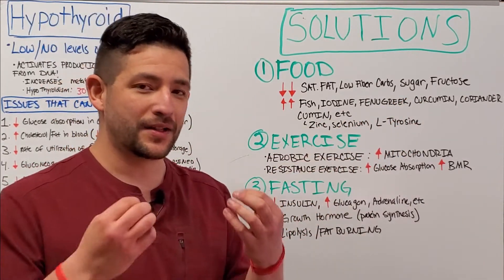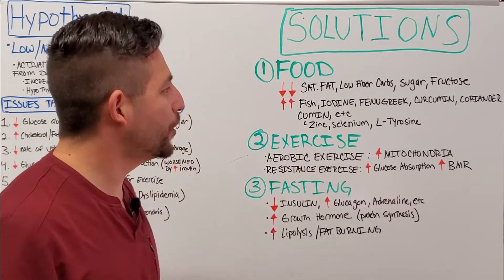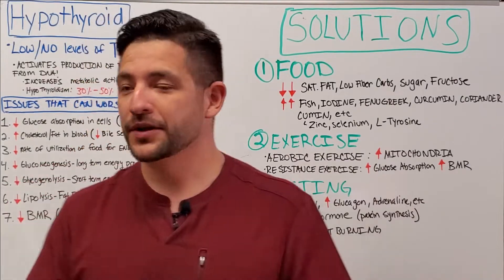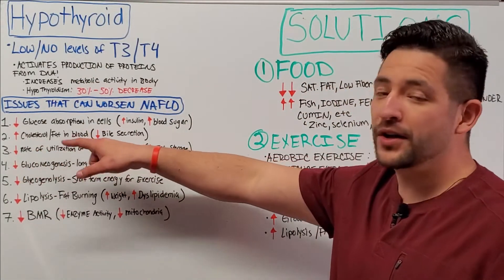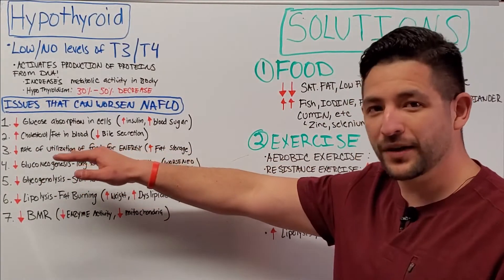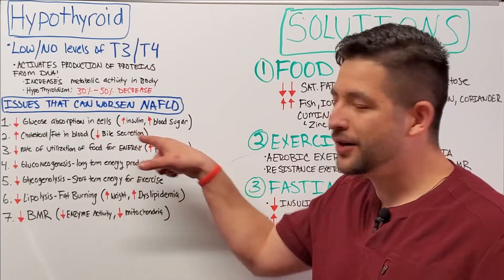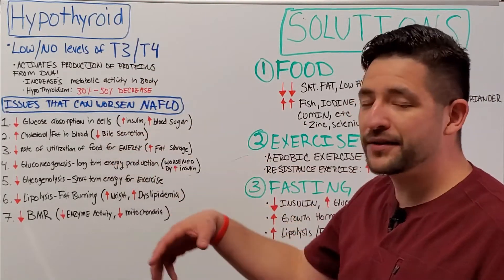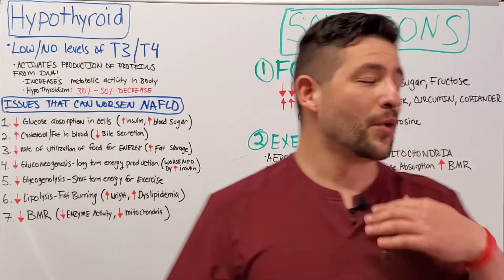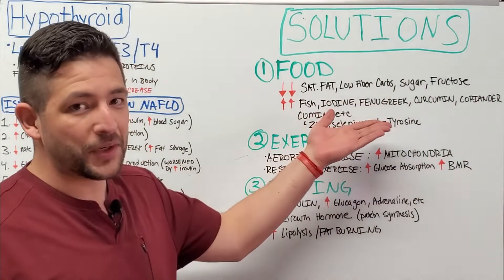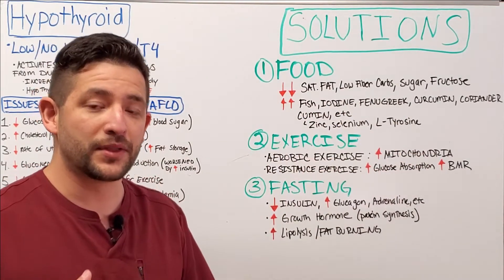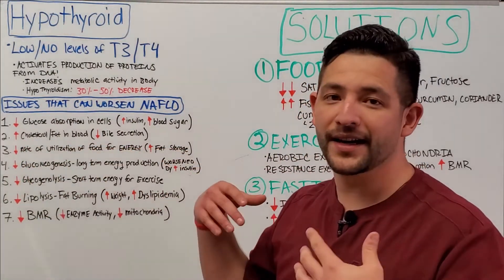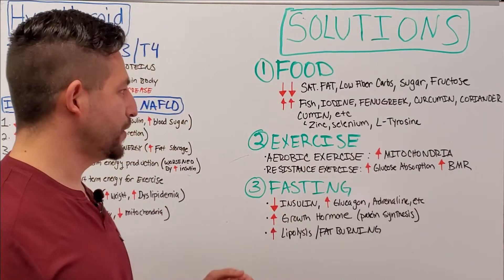You also want to consider eating more specific spices like fenugreek, curcumin, coriander, and cumin. These spices have been shown through studies to help your liver produce more bile — stimulating bile production is really important because with hypothyroidism the lack of T3 reduces bile secretion. Consuming things like fenugreek especially — which is a very potent one — along with curcumin and coriander will help promote more bile production, supporting the release and excretion of excess cholesterol and fat from your blood.